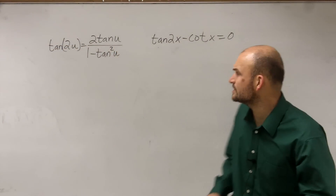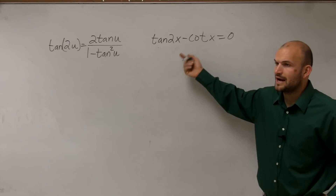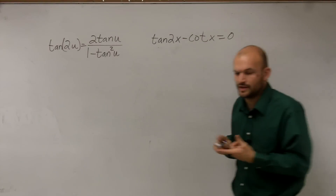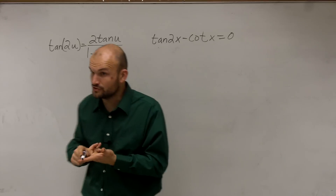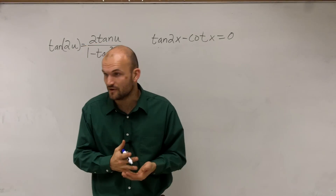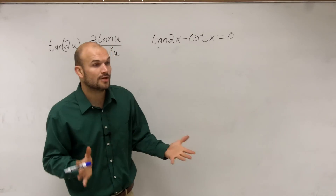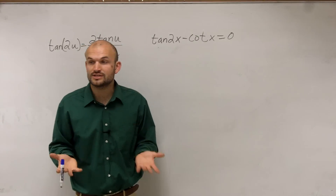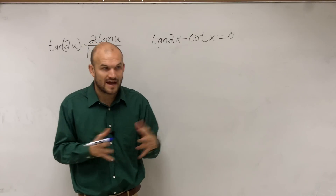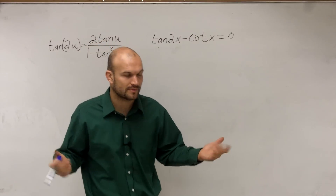Now we have a problem with this equation because I need to solve for tangent of x. There are two different ways that we learned to solve. The first way was just using inverse operations — undoing what's happening to your function, getting it isolated, and then evaluating. Or, if you couldn't use inverse operations, we worked on factoring, and then use the zero product property to solve.